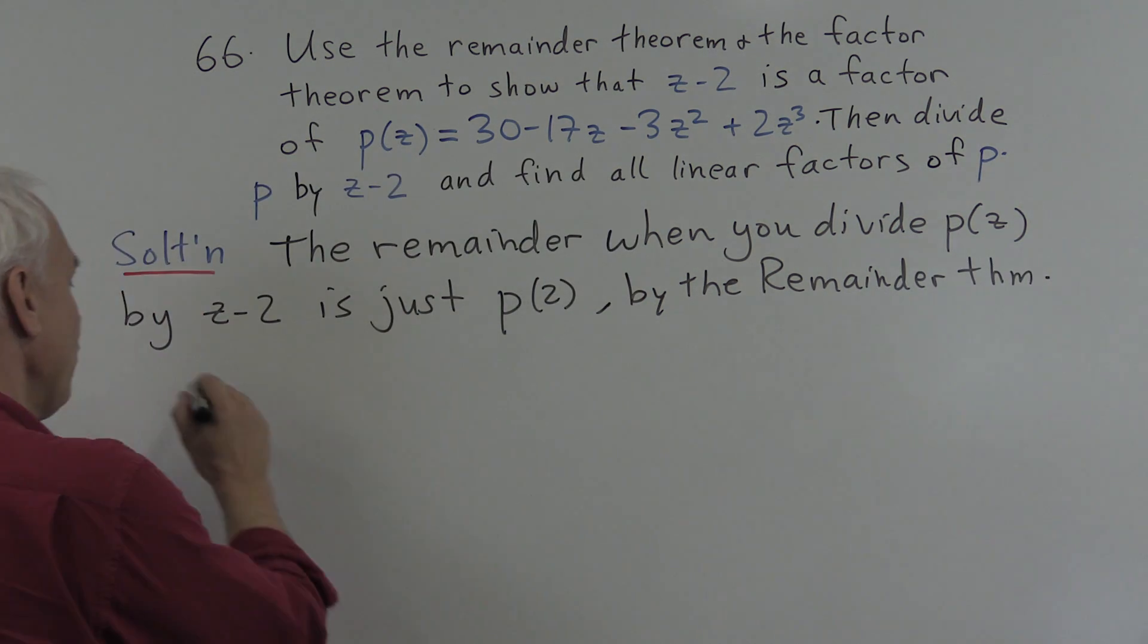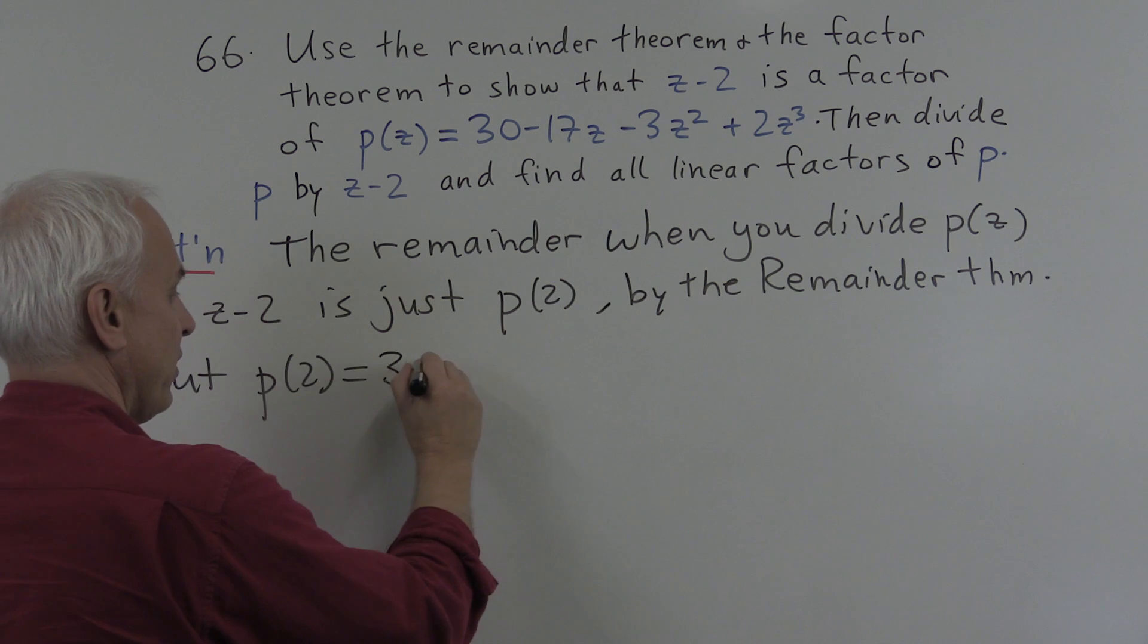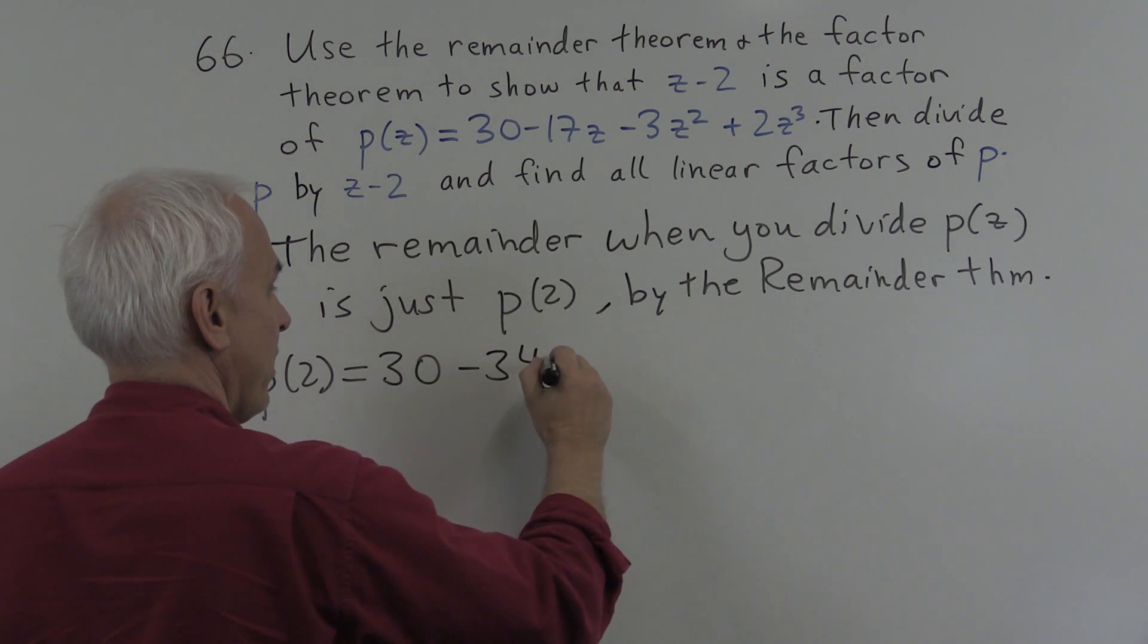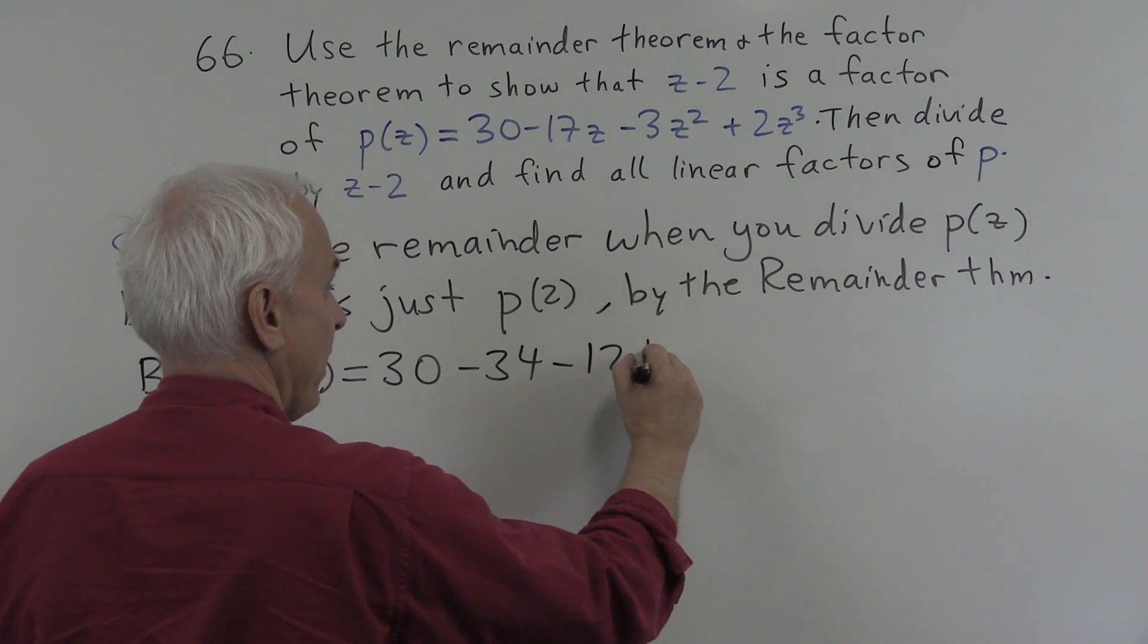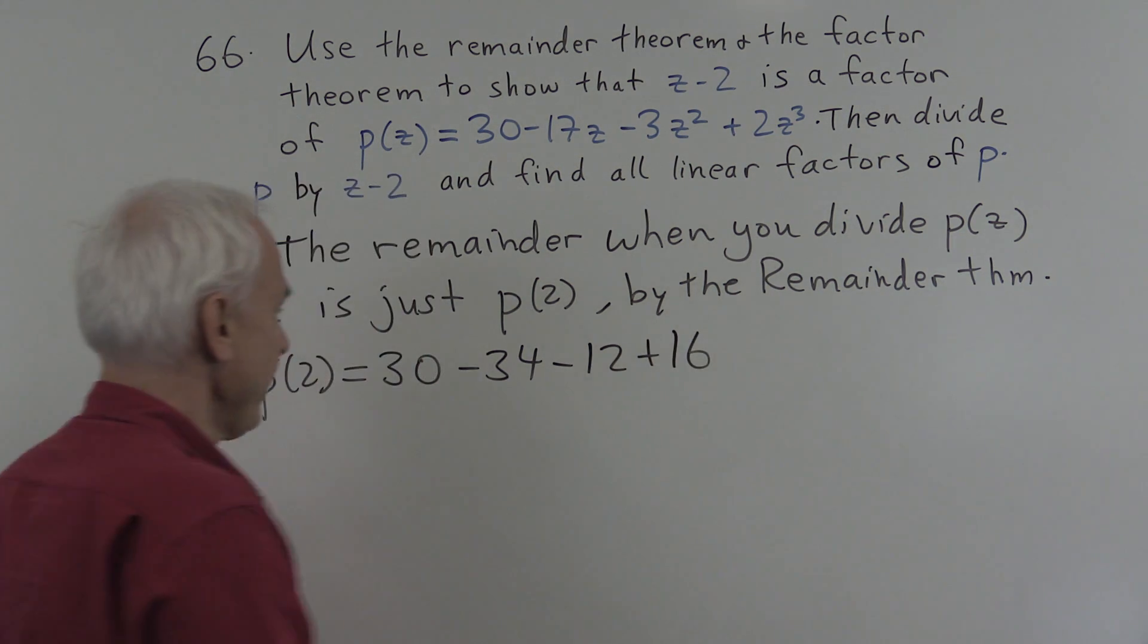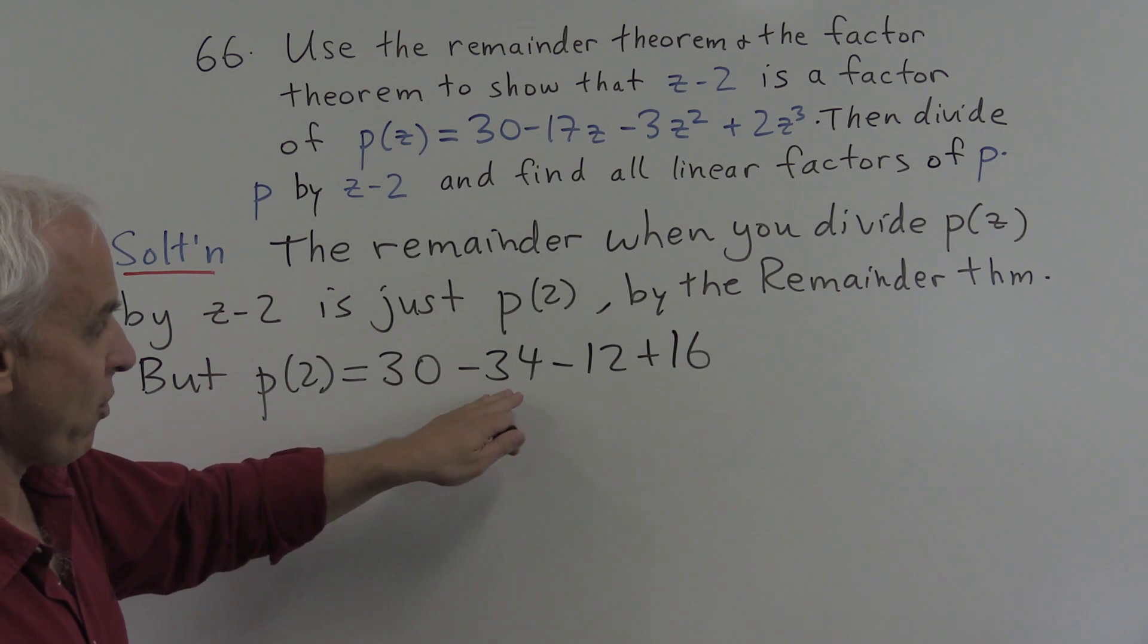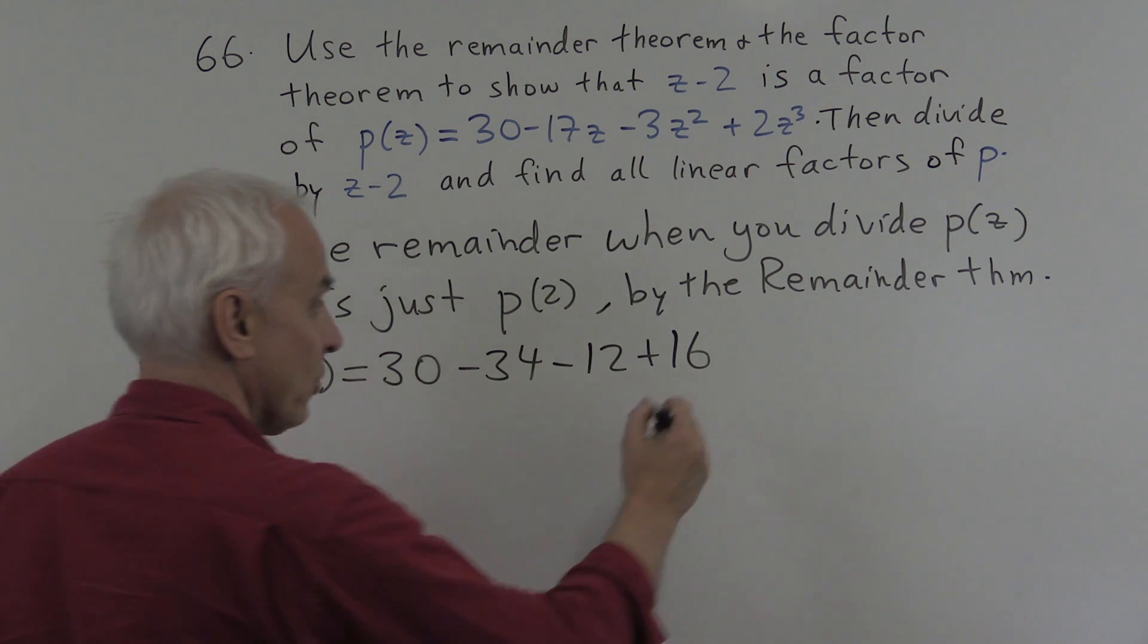And what is p(2)? Well, p(2) is, let's evaluate it: 30. Replace z with 2, so minus 34. Minus 3 times 4 will be 12, and 2 times 8 will be 16. And what is that? That's 30 minus 34, that's minus 4, minus 12, plus 16 is a total of 0.